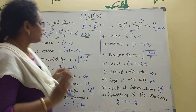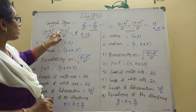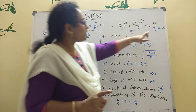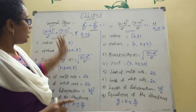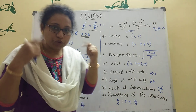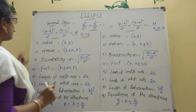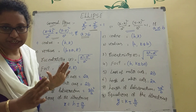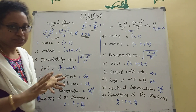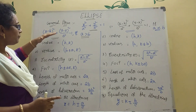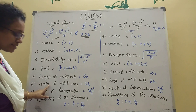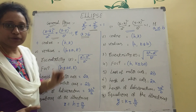There are two cases. The general form is: (x minus h)² by a² plus (y minus k)² by b² equal to 1. Case one: a is greater than b. Case two: a is less than b. We need to learn: length of the major axis, length of the minor axis, length of the latus rectum, equation of the directrices. These are the things we need to learn.